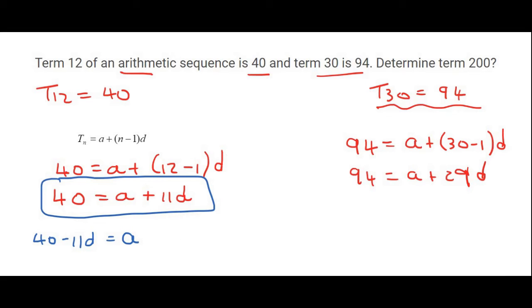You then plug that into the other equation, so that would be 94 is equal to a, which is now 40 minus 11d, plus 29d. I'm going to bring the 40 over, so that's 54 equals 18d. Dividing by 18, we should find that d is 3.